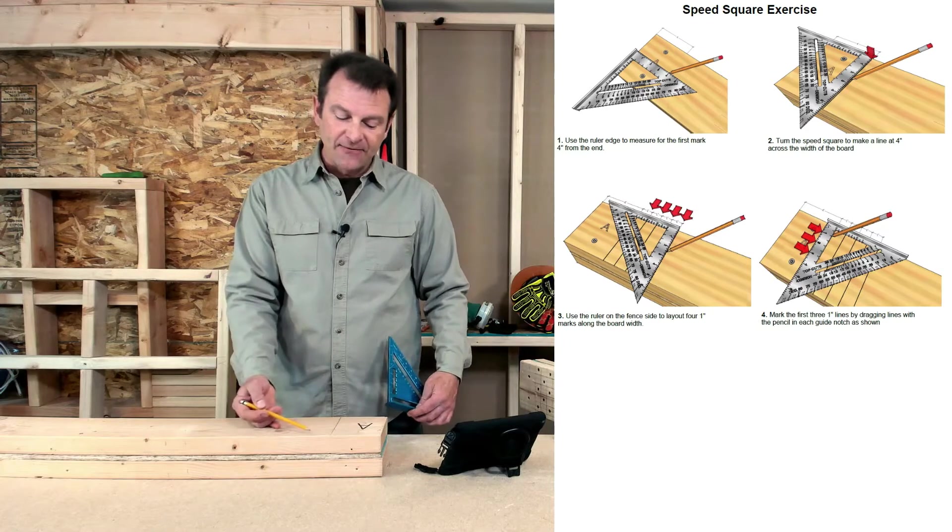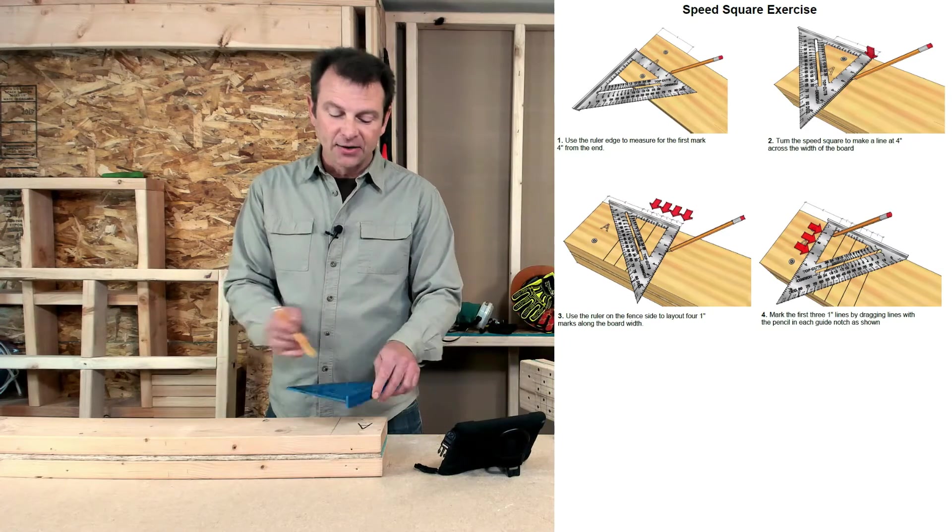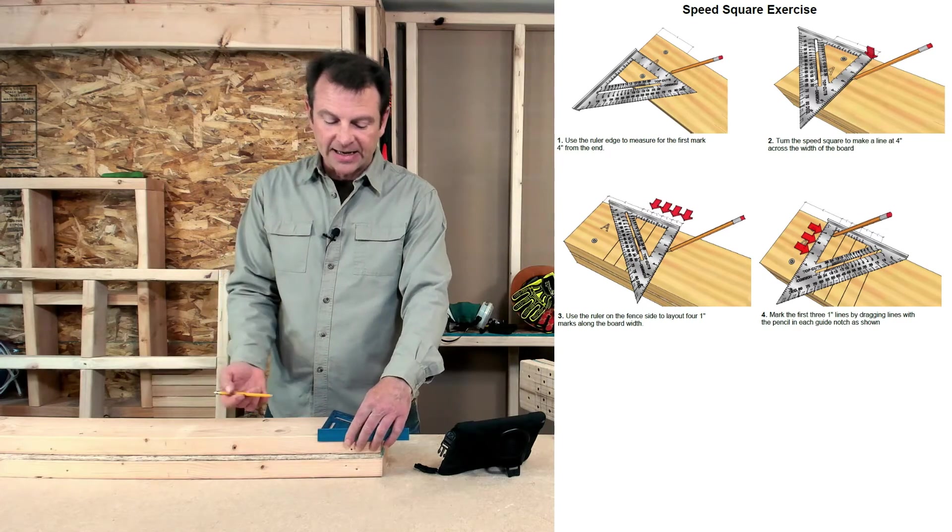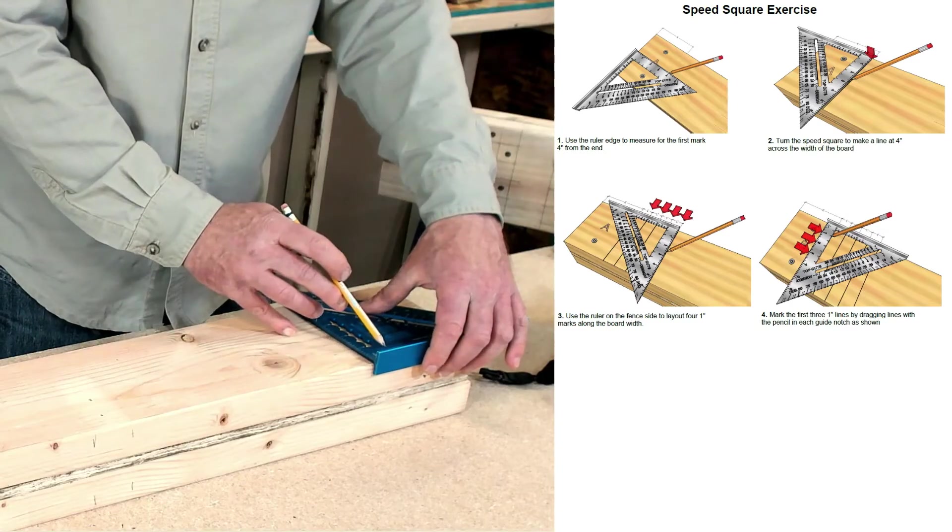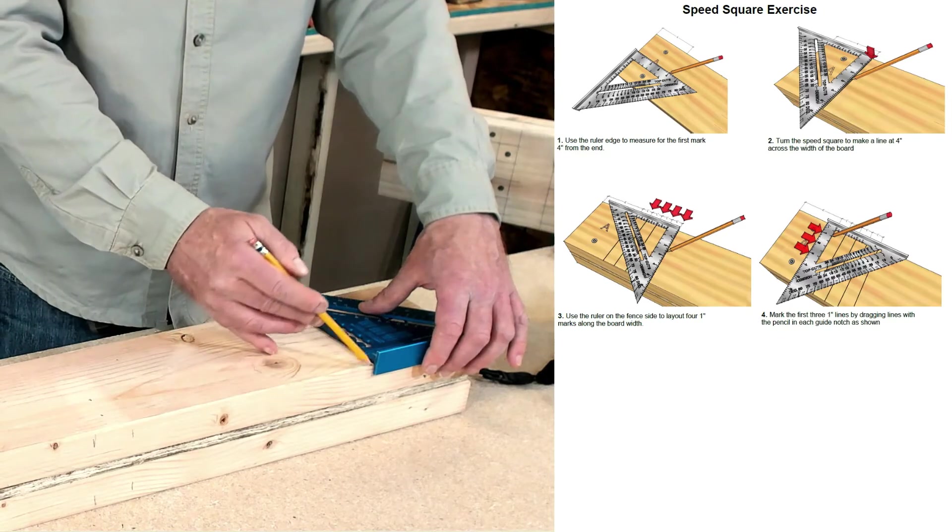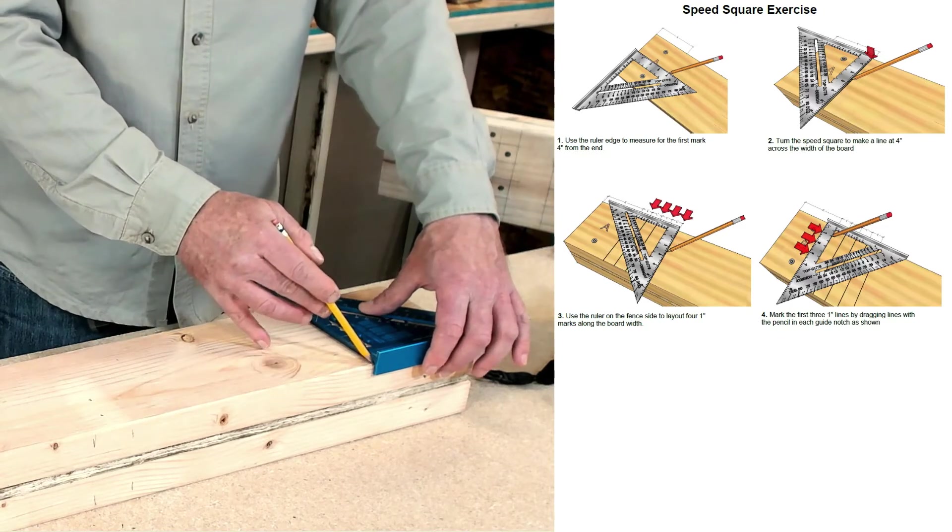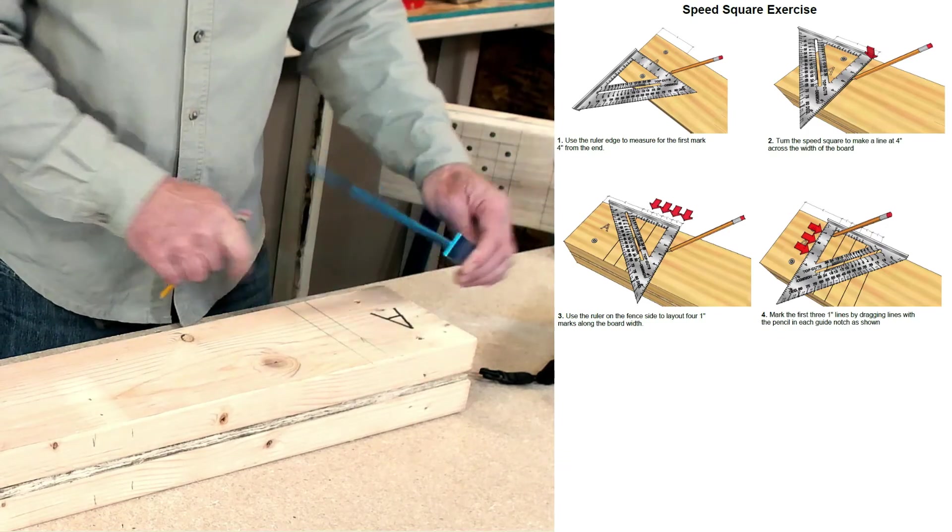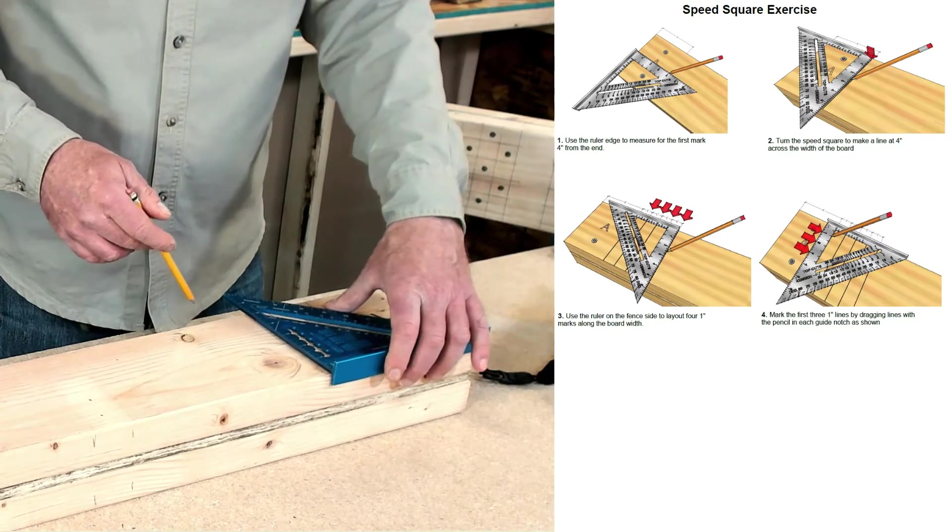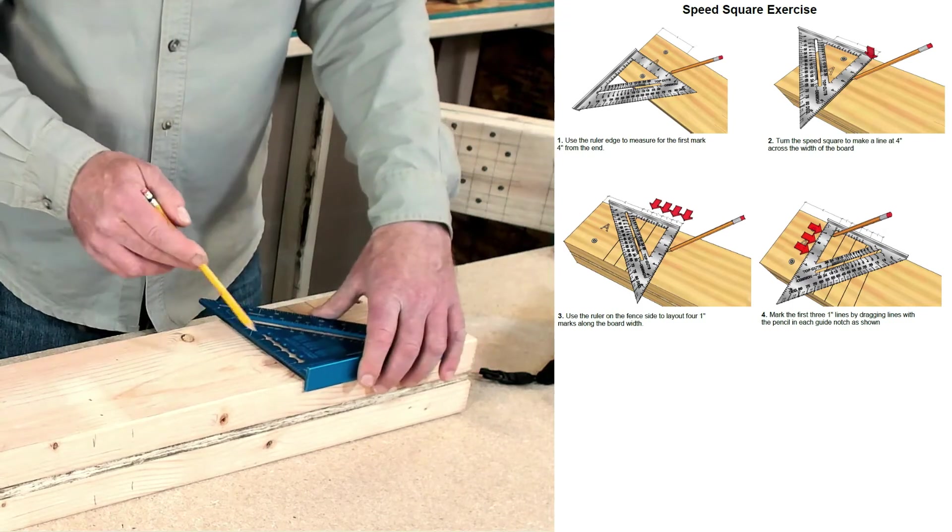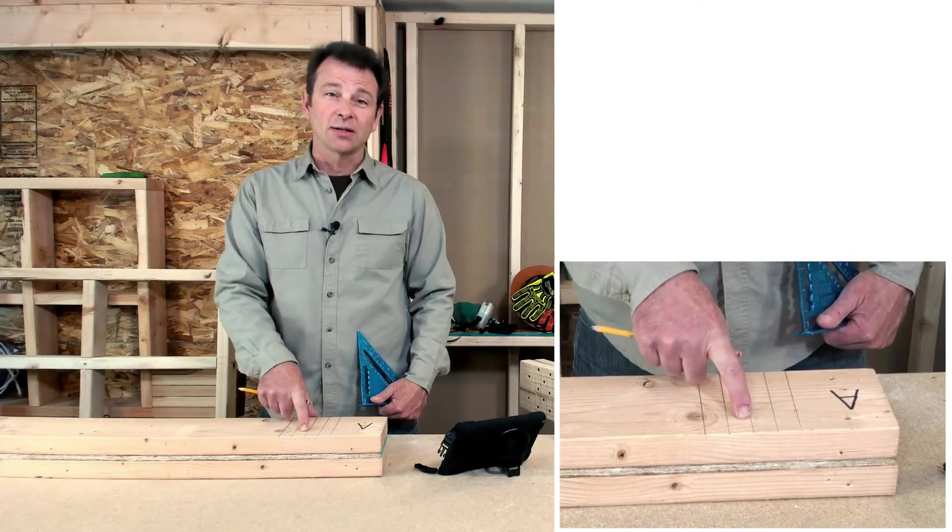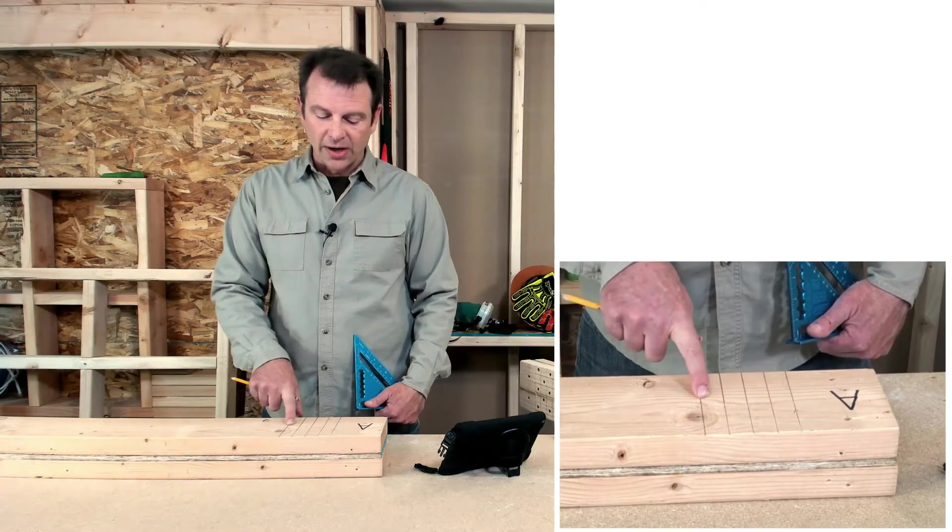Now I need four lines that are one inch from that. I can use this ruler here to make those marks. And I'll just slide this speed square along. I'm lining up my first mark on that one inch line. That's going to set my ruler edge at one inch from the other line. So I'll go ahead and mark that line. As you can see, they're one inch apart. I can slide it down. I can make another one inch line and then I can do it again. One inch line and then one more one inch line. So now I have my first setup. These lines carry across the width of the board and I have my four square grid.